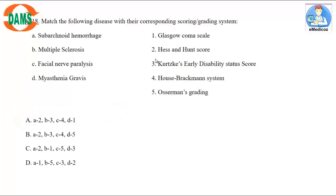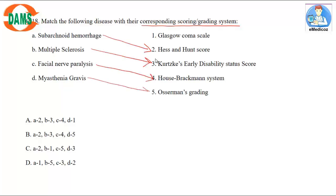Question 18: Match the following diseases with their corresponding scoring or grading system. Subarachnoid hemorrhage — Hunt and Hess score. Multiple sclerosis — Kurtzke Expanded Disability Status Scale. Facial nerve paralysis — House-Brackmann score. Myasthenia gravis — Osserman's grading. Glasgow Coma Scale is for head injury.